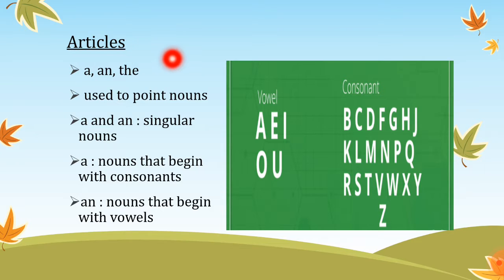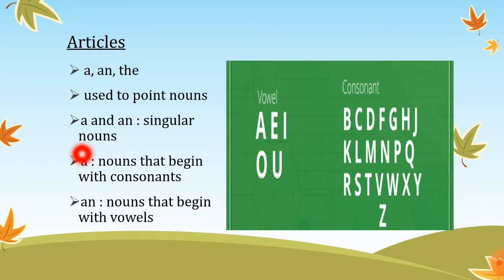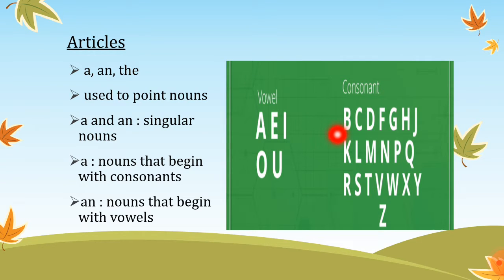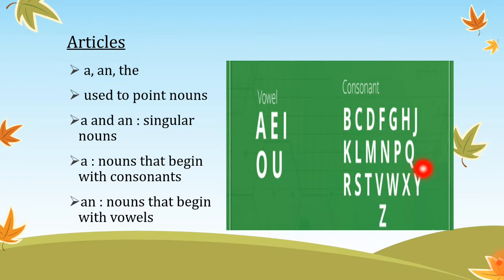First, we have 'a' and 'an' — both of them are used for singular nouns. 'A' is used with nouns that begin with consonants. The consonants include b, c, d, f, g, h, j, k, l, m, n, p, q, r, s, t, v, w, x, y, and z. These are consonants.